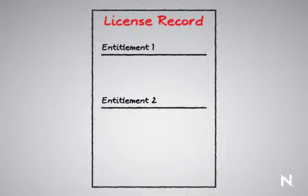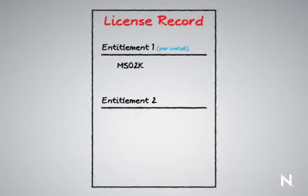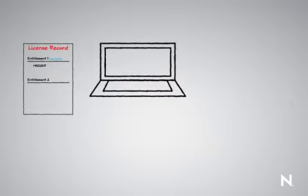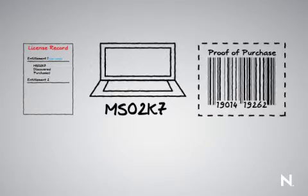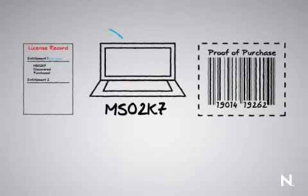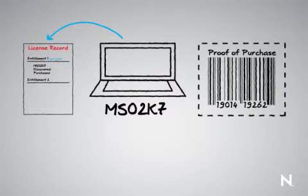In my case, I have two entitlements. The first is a per-install entitlement. This is the typical Microsoft Office-type entitlement, which means if you install the software on a machine, then you're using a license. I then link up and say the discovered product that this entitlement is valid for is Microsoft Office 2007. Then I have to provide a proof of purchase, because any good auditor is going to come in, look at your report, and ask you to prove that you have the appropriate license. So essentially you're going to insert, via import or manually, all of the information about what you've purchased and say this item corresponds to Microsoft Office.